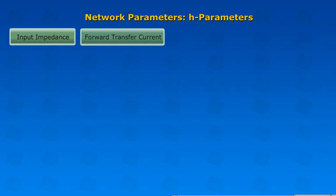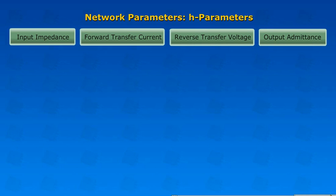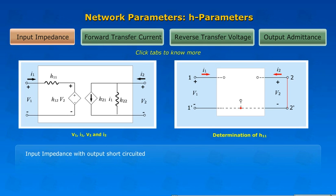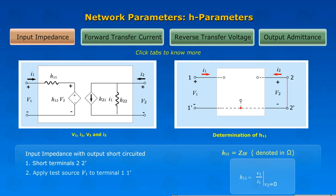Input Impedance, Forward Transfer Current, Reverse Transfer Voltage, Output Admittance. Input Impedance with Output Short-Circuited: Short Terminals 2-2, Apply Test Source V1 to Terminal 1-1.